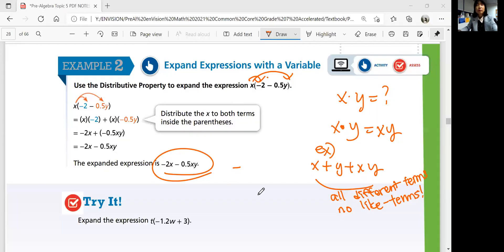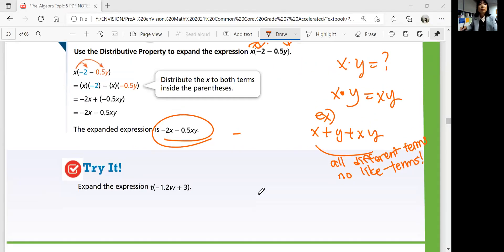Okay, are you ready? Use distributive property to distribute t out. t times negative 1 over 2w plus t times 3 is simply negative 1/2wt plus 3t.